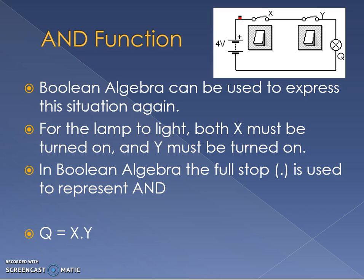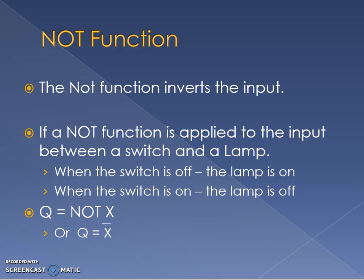So we've got OR and AND. Just before we continue, I'll just give you a 15 second pause to have a think what other functions there may be. That's right, there's the NOT function. NOT inverts the input. So NOT turns 0 into 1, or 1 into 0. So when the switch is off, the lamp is on. When the switch is on, the lamp is off. And NOT is written like NOT X, or in Boolean algebra, it's written with a line across the top. So Q equals NOT X.